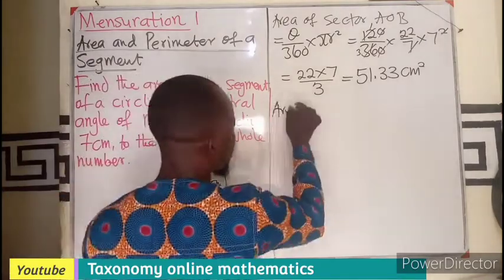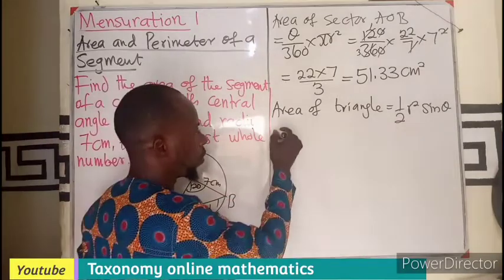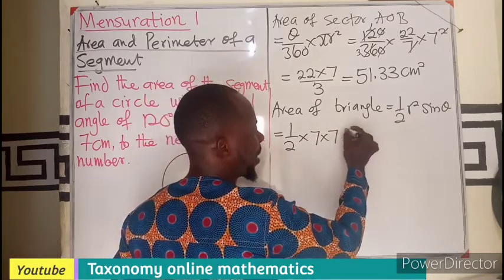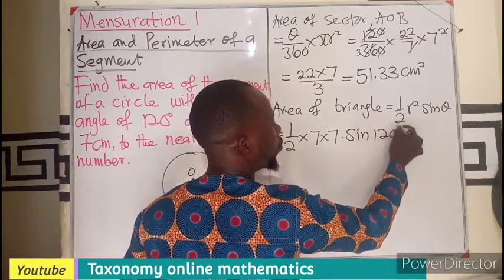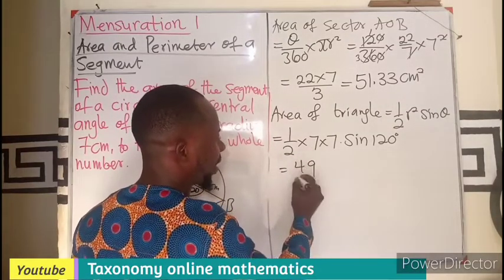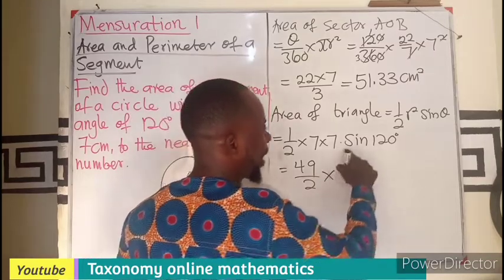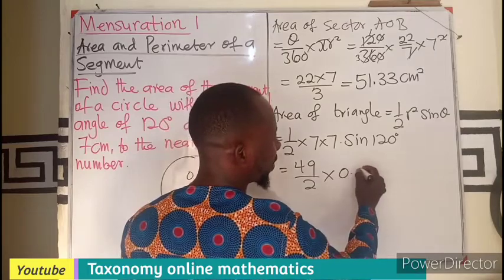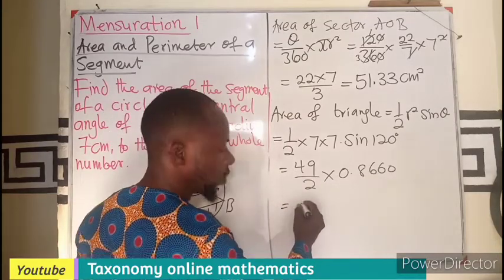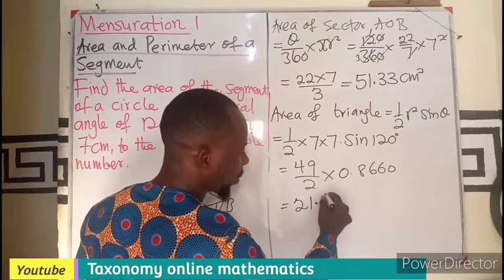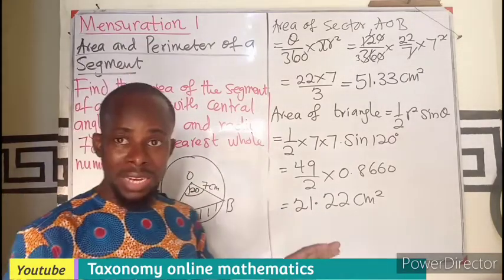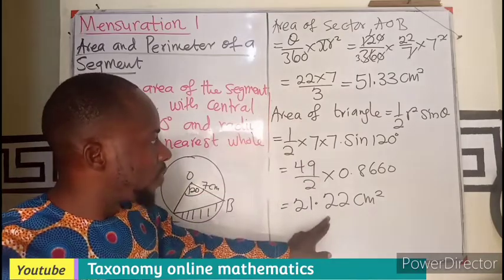Second will be area of the triangle. So, fast forward. 1 over 2 R which is now 7 times 7. Then, we are multiplying by sine 120 degrees. So, from here, we are going to multiply this by this to get 49 divided by 2. Then, multiply by sine 120 which is 0.8660. So, 49 times this divided by this will give us 21.22 area. cm squared. So, we are not done. This is just the area of the sector area of the triangle. We are looking for area of segment.